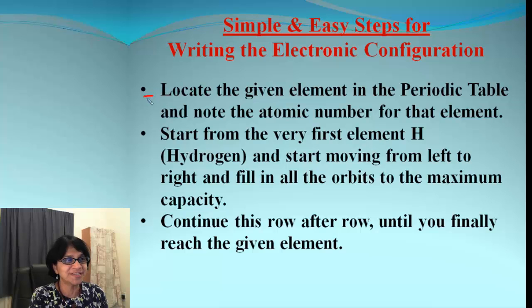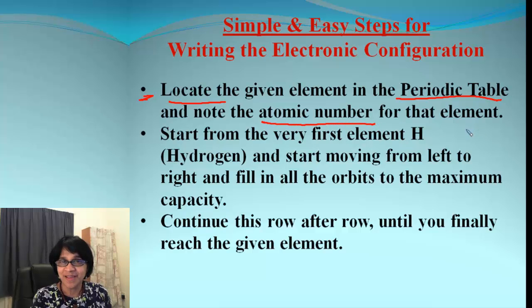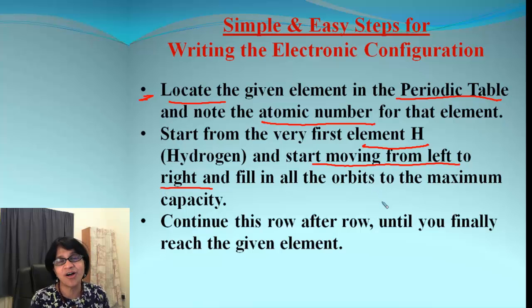I hope you all remember the simple easy steps in writing a correct electronic configuration for any given element. The number one first step here should be locating that given element in the periodic table and make sure at that point to note down the atomic number of that element. Once you find out atomic number, then it's simply beginning from the left most part of the periodic table in the very first row. That's beginning with hydrogen and moving from left to right from first row to second row and on and on till we reach finally our given element. Now there is one rule we have to make sure that we are completely filling all the orbitals as we go to the desired element.